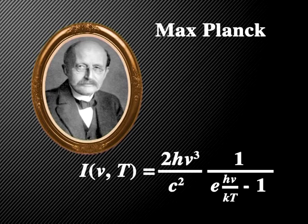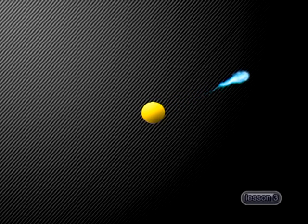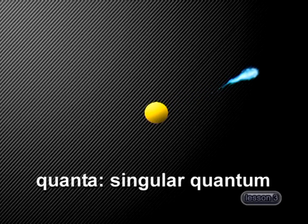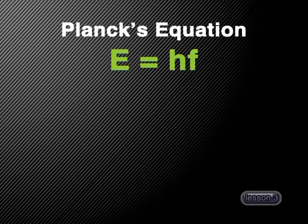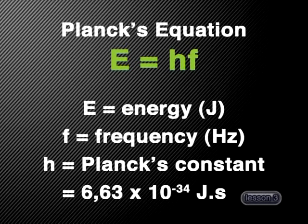Max Planck developed some new ideas about energy, which Albert Einstein used to explain the photoelectric effect. In 1900, Planck put forward a theory to explain the amount of energy given off by a surface. Since the particles of any surface are in constant motion, the vibrations give off energy. Planck suggested that this energy is not continuous but comes off in small packages called quanta. According to Planck, the amount of energy in each of these packages is directly proportional to the frequency of the vibrations and can be calculated using the equation E equals H times F, where E is the energy being given off, F is the frequency of the vibrating particles, and H is Planck's constant, equal to 6.63 times 10 to the minus 34 joule seconds.